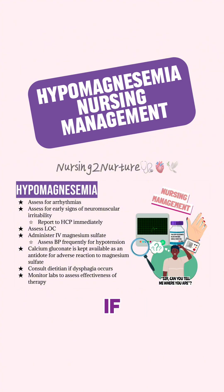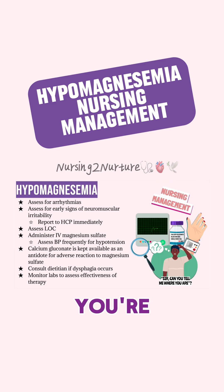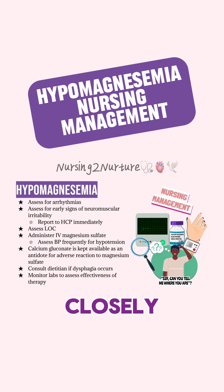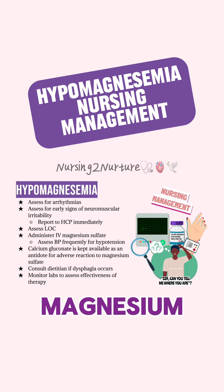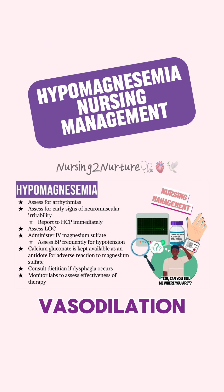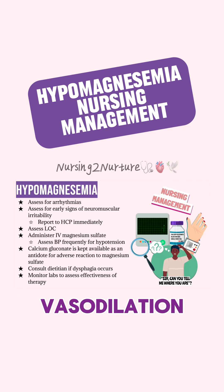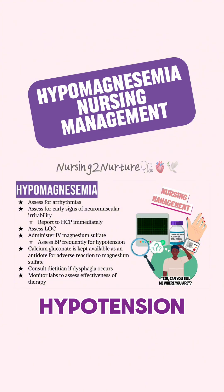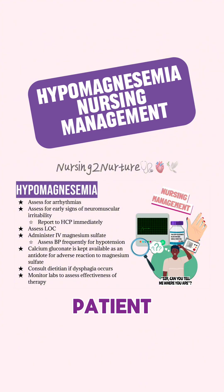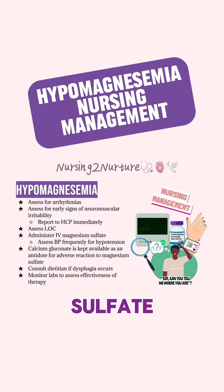This is very important: if your patient is receiving magnesium sulfate via IV, you're going to want to monitor your patient's blood pressure closely for hypotension. Remember that magnesium causes vasodilation, and if you recall from anatomy and physiology, vasodilation leads to a decrease in blood pressure. So hypotension may be a sign that your patient is experiencing toxicity from the magnesium sulfate.